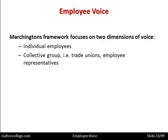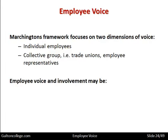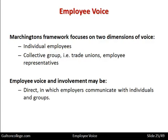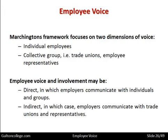Marchington's framework focuses on two dimensions of voice: individual employees and the collective group — for example trade unions and employee representatives. So there are two types of dimensions: voice can be individual or collective. Employee voice and involvement may be direct, in which employers communicate with individuals and groups, or indirect, where employers communicate with trade unions and representatives. Indirect means the individual is linked to management only through the trade union; direct means employers communicate directly with individuals or groups.